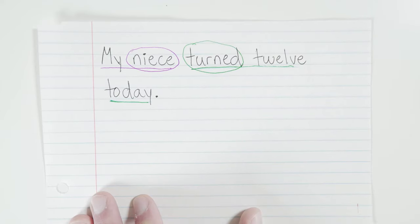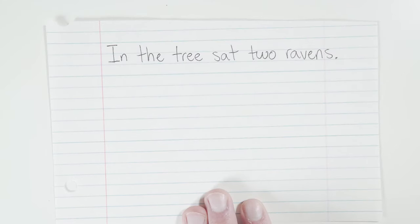If you know your basic subjects and predicates, you already know that. But what happens when our subjects and predicates are not in that very basic standard order? What happens if you have a sentence like this? In the tree sat two ravens. Okay? So take a moment and look at this. What is my complete subject in this sentence? Who or what am I really talking about? Take some time.